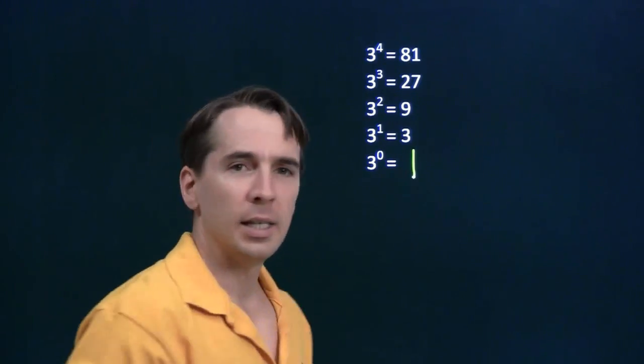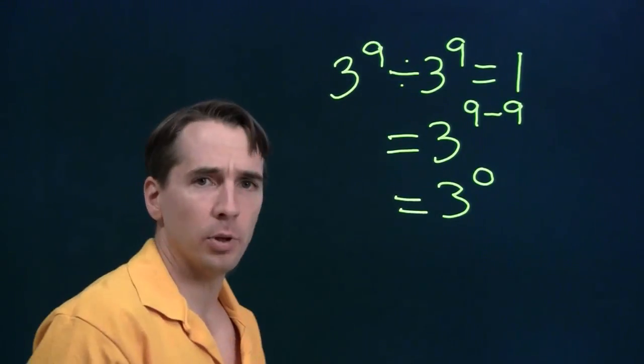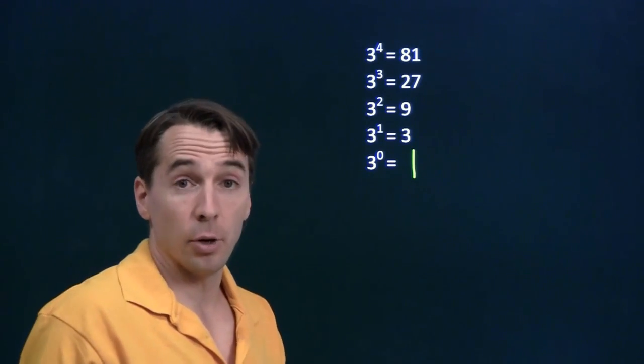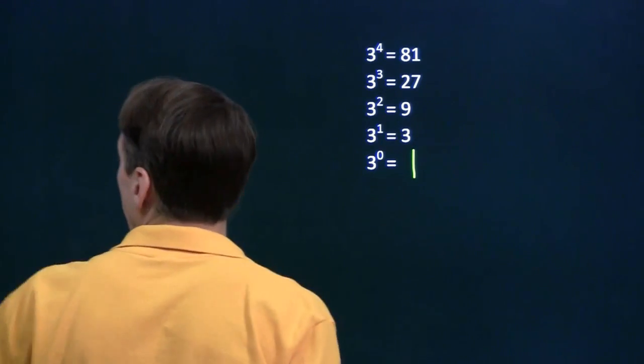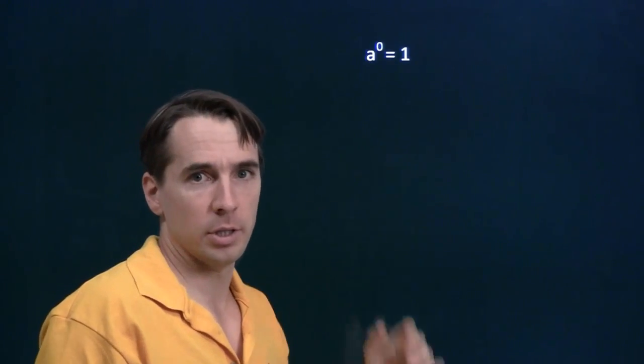So both of these, looking at our original exponent rule and looking at this pattern, both suggest that 3 to the 0 should be 1. And they both explain why we might want to define the 0th power of any number to be 1, any number at all we put in there.